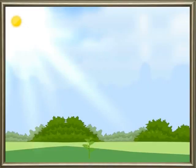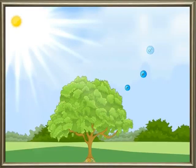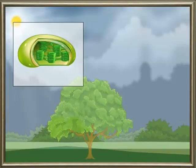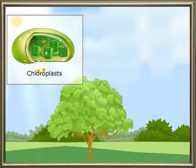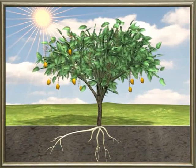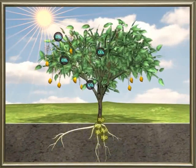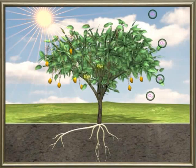Plants prepare food in the chloroplasts present in the green leaves. With the help of sunlight, water and carbon dioxide are supplied to chloroplasts for this process to take place. Plants use this food for their own metabolic activities and the rest they store in different parts of the plant. Green plants prepare their own food by the process of photosynthesis, and the remaining food is stored in different parts of the plants.